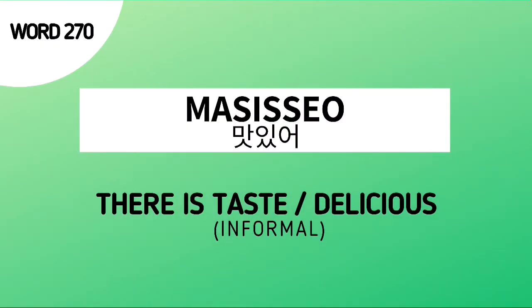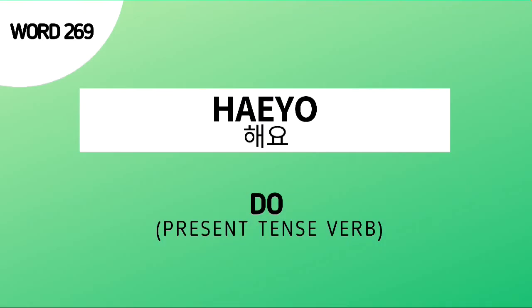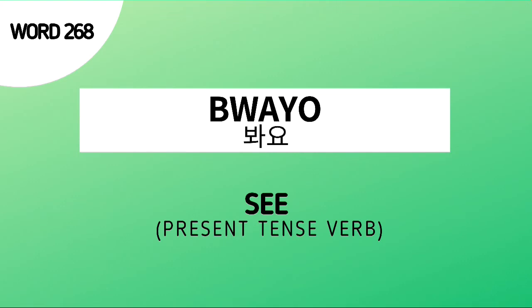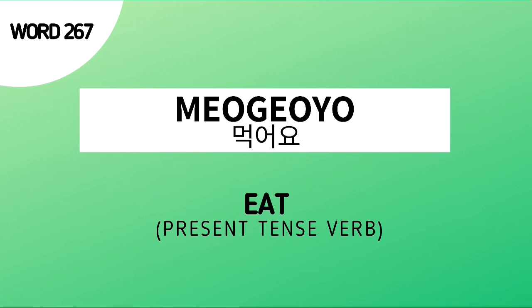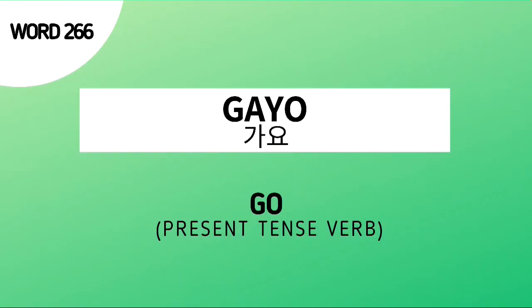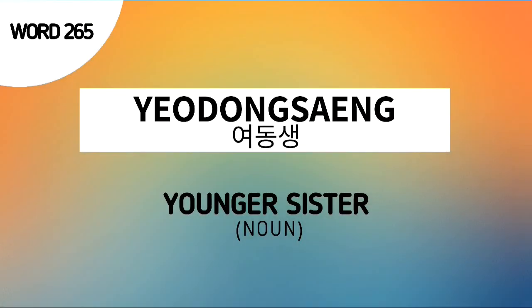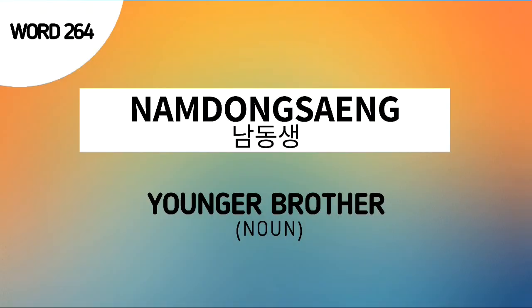The first word for our review is word number 270, Masissa, which means there is taste or delicious in an informal manner. Word number 269 is Hae, which means do. Word number 268 is Bwa, which means see. Word number 267 is Mogoyo, which means eat. Word number 266 is Kayo, which means go. Word number 265 is Yeo Dong Saeng, which means younger sister. Word number 264 is Nam Dong Saeng, which means younger brother.